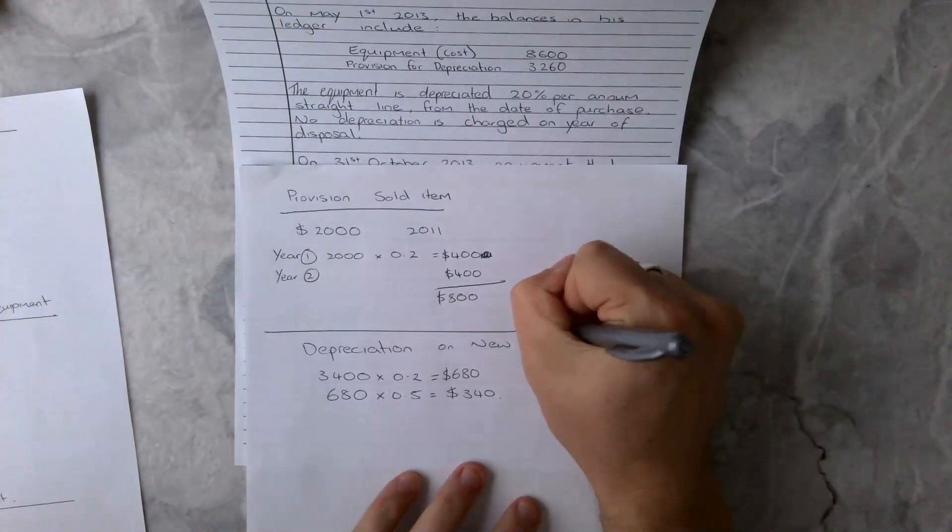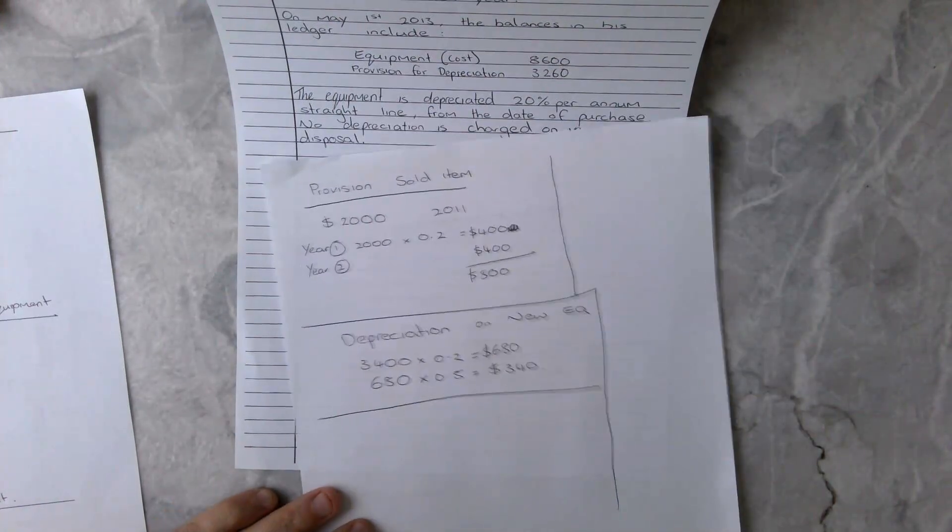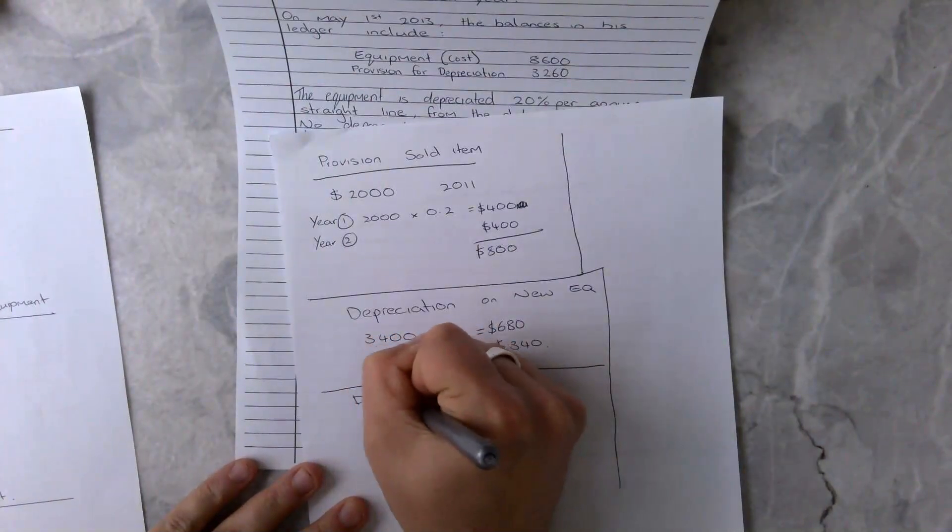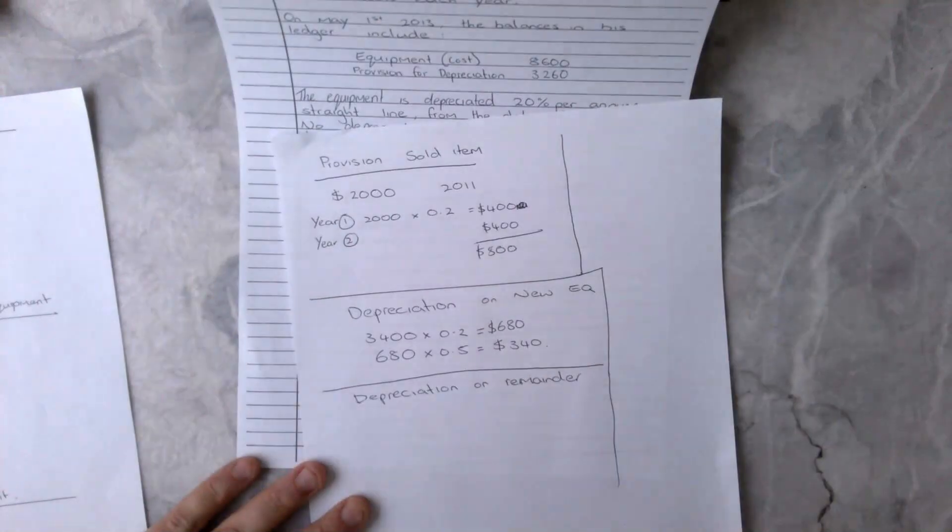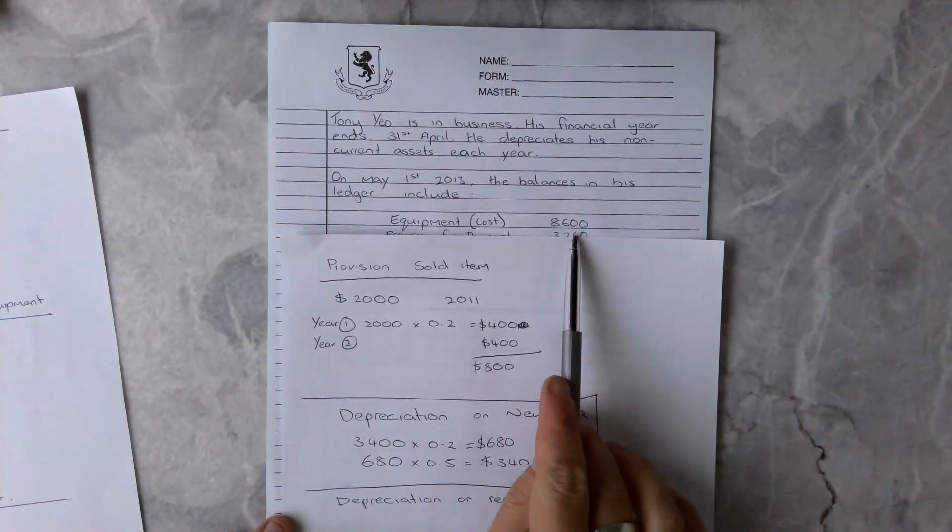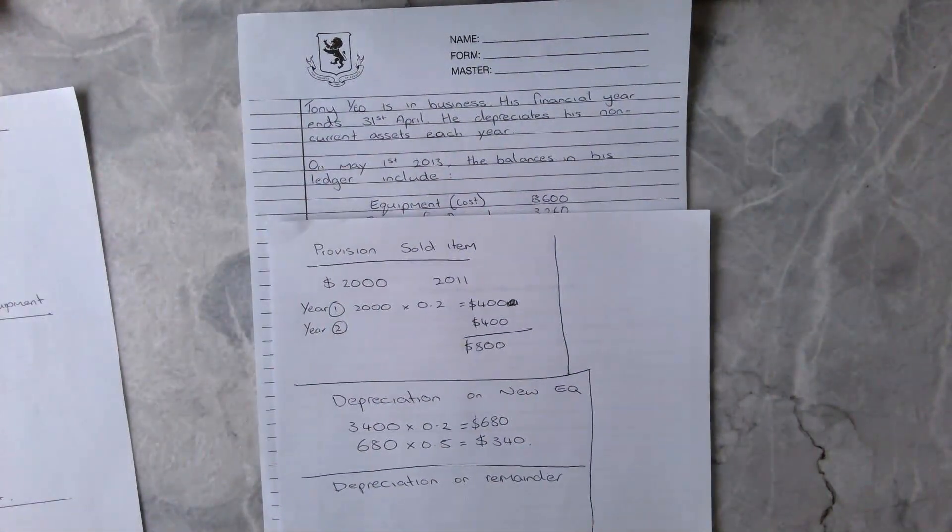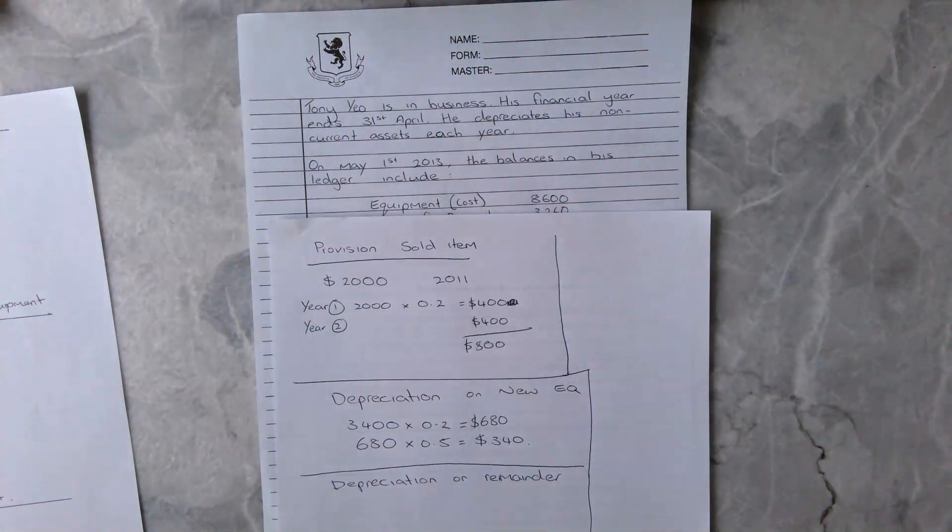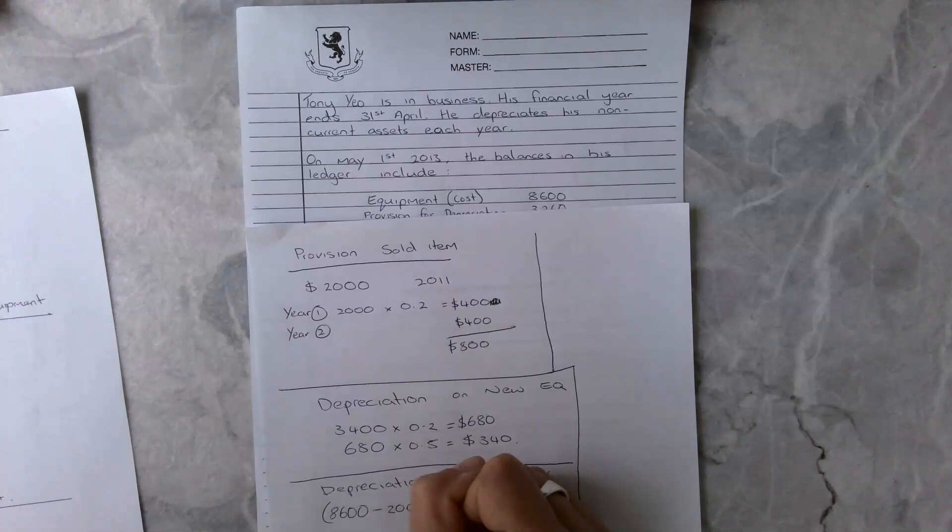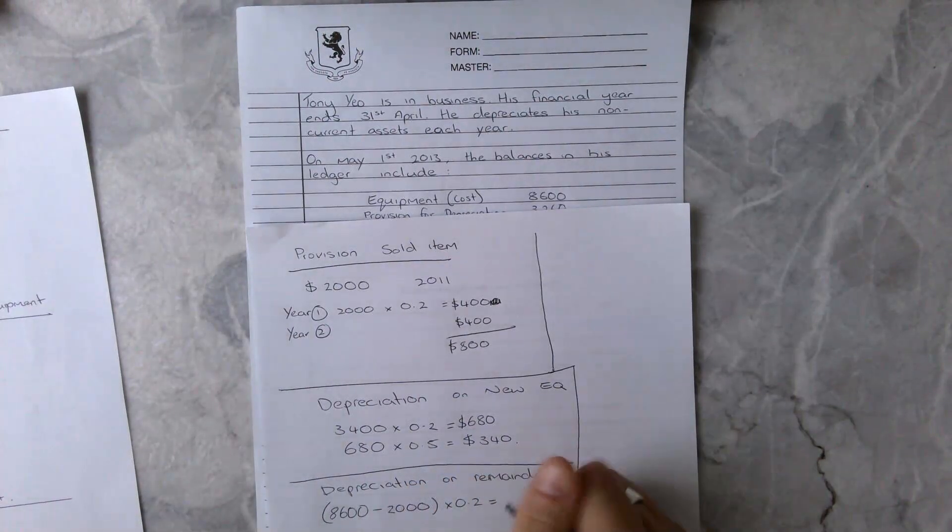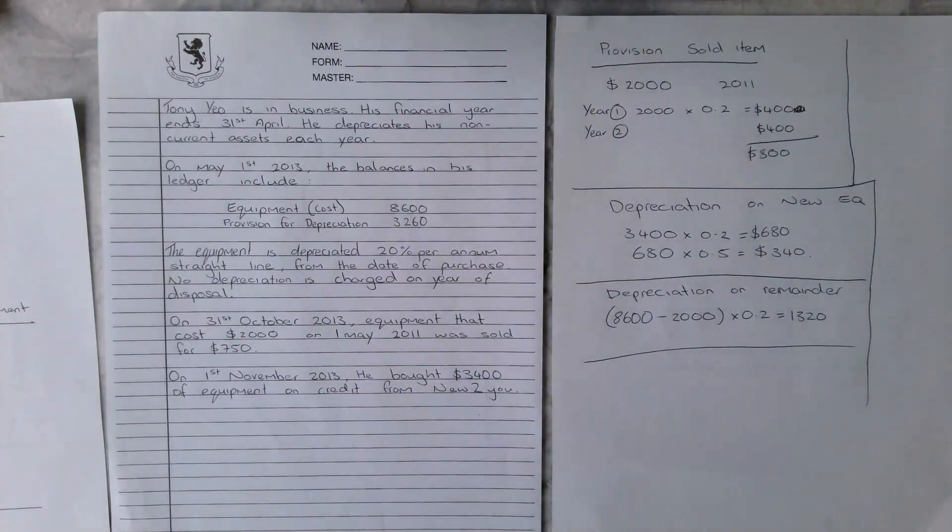So that's our two depreciation done. Are we done yet? No, because we also have to work out our depreciation for the year on the remaining stock. Depreciation on remainder. This remainder is the equipment mentioned up here that costs $8,600. We need to depreciate that. But we cannot just depreciate the $8,600 because that would be irresponsible. So what we're going to do is $8,600 minus the $2,000 that we sold times the 20%, which equals our $1,320. So that's all our calculations done, nice and simple, straight there. There is nothing really too complicated about that.